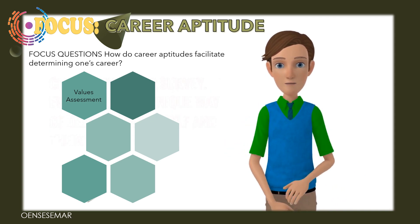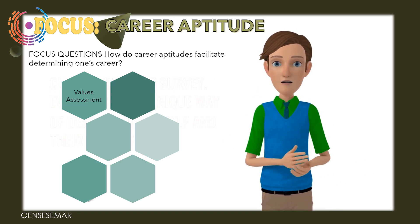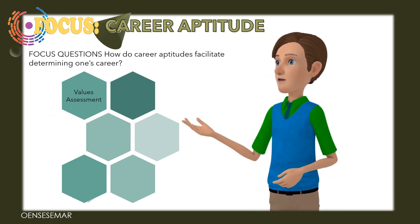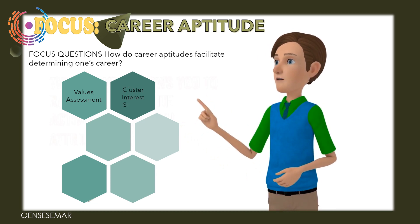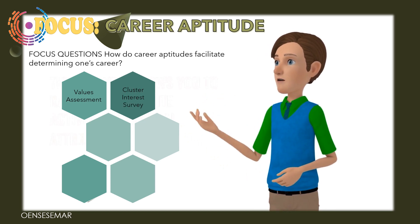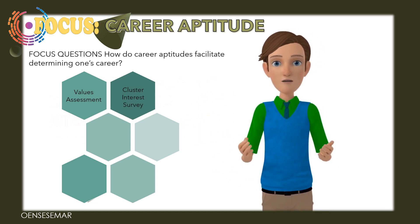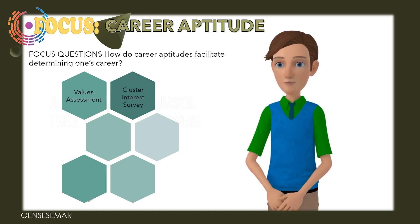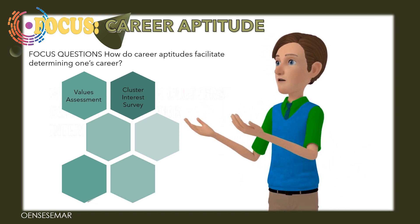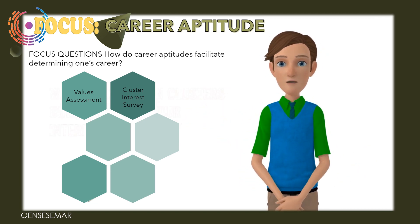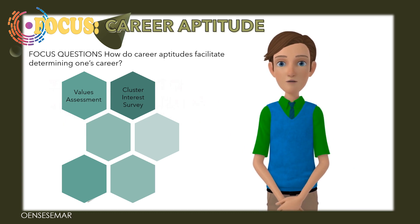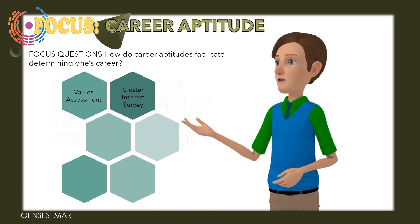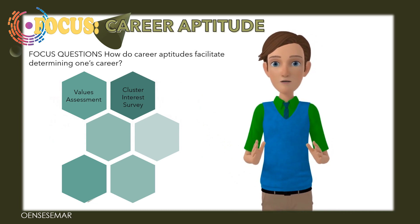Cluster Interest Survey: Everyone has a unique way of describing oneself and their interests. This survey allows you to rank your favorite activities, personal attributes, and academic courses. You may then determine which profession clusters correspond to your interests. At the end of the survey, you will get a list of career clusters that are a good fit for your interests.